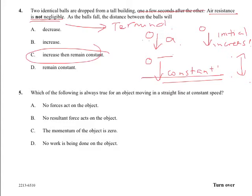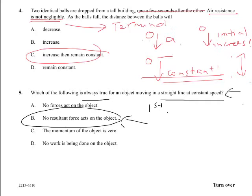Question five. Which of the following is always true for an object moving in a straight line? If you remember Newton's first law, the answer is B, because when an object is going at a constant speed, it's because there are no resultant force. If it was A, there's always the option, no forces. If no forces are acting, it's possible that the object could be standing still. So when something is standing still, or moving at a constant speed, the only possible answer is B.